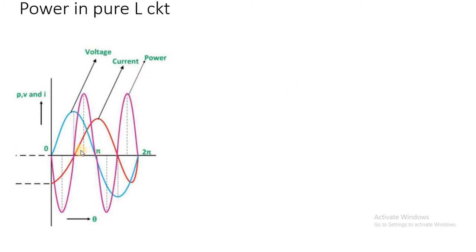From pi by 2 to pi, both voltage and current are in the positive half cycle, so the power product is positive. From pi to 3 pi by 2, voltage is negative but current is positive, so power is again negative. From 3 pi by 2 to 2 pi, both current and voltage are negative, so their product is positive. The power curve thus alternates between negative and positive half cycles.